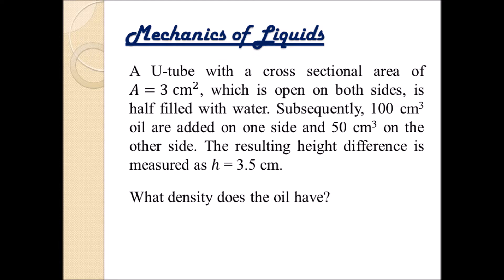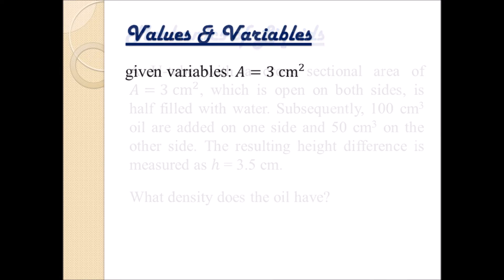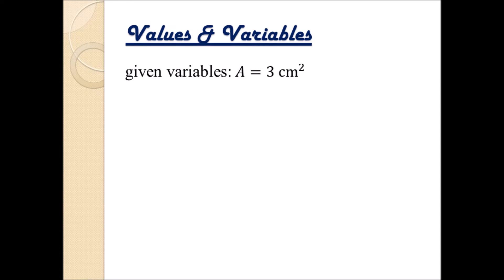What density does the oil have? So what can we take out of the text? We have some given variables and values. We know that the cross-sectional area A is 3 cm squared, and we have in both columns of the U-tube different amounts of oil: V1 equals 100 cm cubed and V2 equals 50 cm cubed. Finally, we have measured the height difference as 3.5 cm, and we are searching for the density rho of the oil.